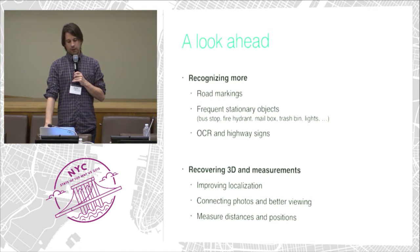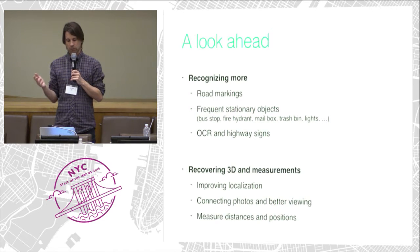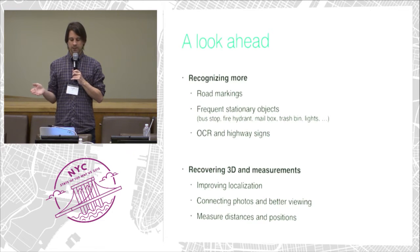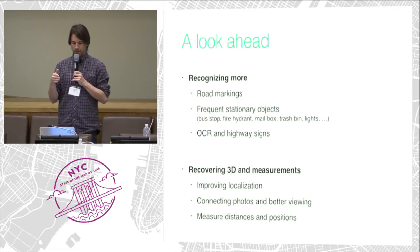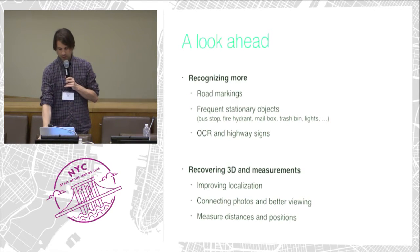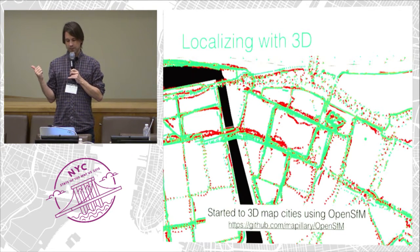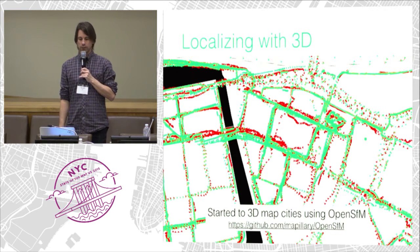We're working a lot on 3D — when we combine images together we're actually also computing 3D. Over the next couple of weeks we'll make releases where the 3D will improve the positioning of photos, improve the viewing experience, and make it possible to measure distances and position things in the images. We have our own open source tool chain for this called OpenSFM — it's on GitHub with a BSD license if you want to play with it.